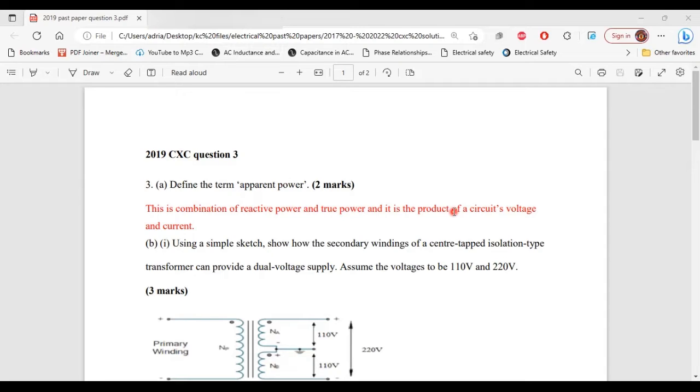For example, the total power that is needed for a computer to work, that power is called apparent power. Alright, so that's it for part A.